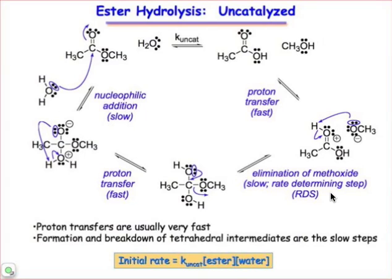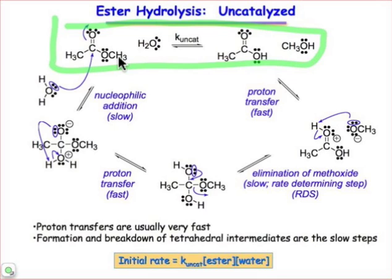Here we want to compare the mechanism for an uncatalyzed and catalyzed reactions so that we can discover how it is that the catalyst shows up in the rate law. We're going to look at the ester hydrolysis reaction, shown in this box. We have an ester group — that functionality — in the presence of water, which yields a carboxylic acid and a molecule, in this case of methanol. The overall process is governed by this rate coefficient, k_uncat.